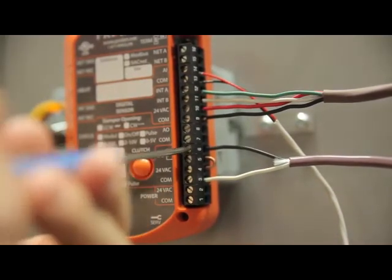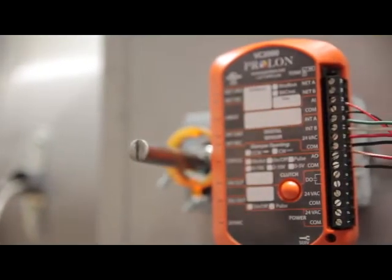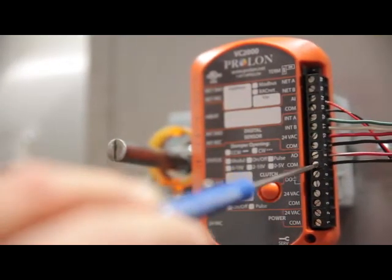Finally, if your equipment requires a modulating 0 to 10 VDC signal, connect it on the VC2000's analog output on terminals 7 and 8.